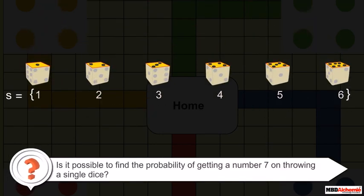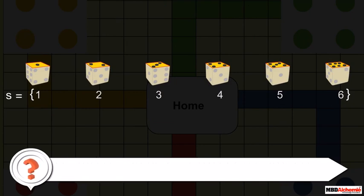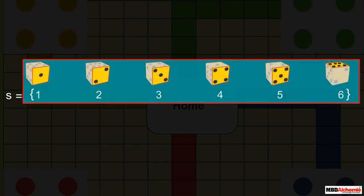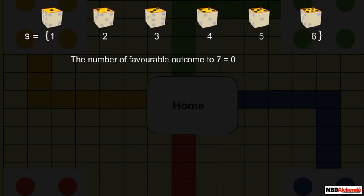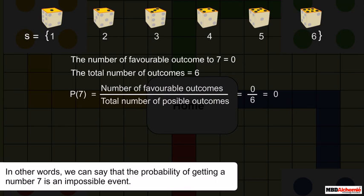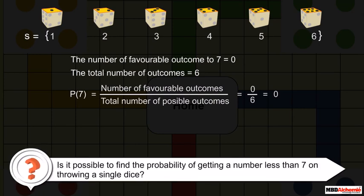Is it possible to find the probability of getting a number 7 on throwing a single dice? No. As we know, there are only 6 possible outcomes in a single throw of a die: 1, 2, 3, 4, 5, and 6. Since no face of the dice is marked with 7, there is no outcome favorable to 7. So the number of favorable outcomes is 0, and the total number of outcomes is 6, making the probability of getting a number 7 equal to 0. This is called an impossible event.